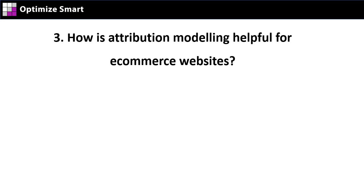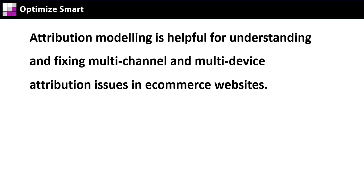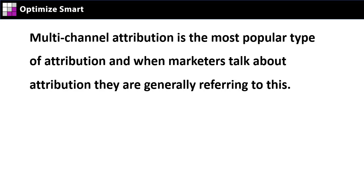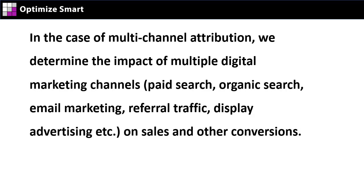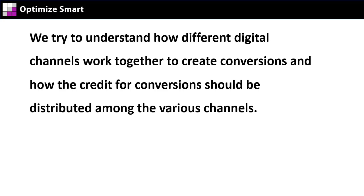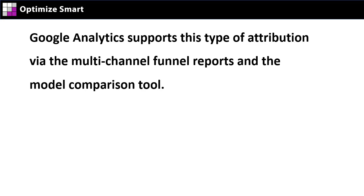How is attribution modeling helpful for e-commerce websites? Attribution modeling is helpful for understanding and fixing multi-channel and multi-device attribution issues. Multi-channel attribution is the most popular type of attribution, and when marketers talk about attribution, they are generally referring to this. In the case of multi-channel attribution, we determine the impact of multiple digital marketing channels — paid search, organic search, email marketing, referral traffic, display advertising, etc. — on sales and other conversions. We try to understand how different digital channels work together to create conversions and how the credit for conversions should be distributed among the various channels. Google Analytics supports this type of attribution via the multi-channel funnel reports and the model comparison tool.